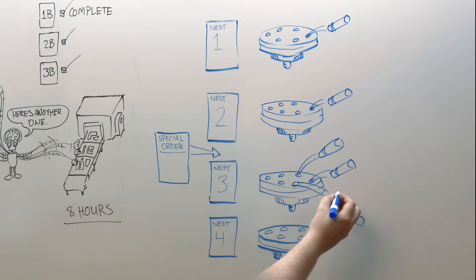Nest 3 was easy to set up coming after nest 2. However, when you have to add a special nest in between nest 2 and 3, both the special nest and nest 3 become more difficult to set up.